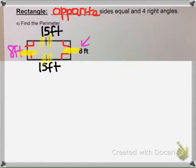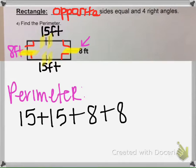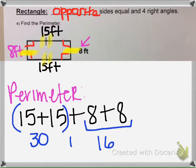So if we want to find perimeter, we're going to go ahead and add all the sides together. So I'm going to group using the associative property, the 15 and the 15 together. That's 15 + 15 is 30. And then I have 8 + 8 is 16. And then 30 + 16 equals 46 feet.